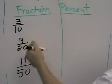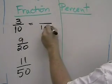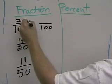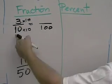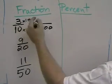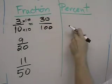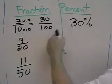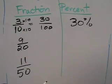In this case, 3 tenths, it's very easy for me to change it into a denominator of 100. All I have to do is multiply both the numerator and the denominator by 10. 10 times 10 is 100, 3 times 10 is 30. So 30 out of 100 is 30%. So 3 tenths is 30%. Similarly,